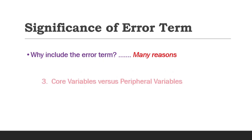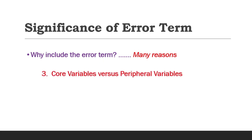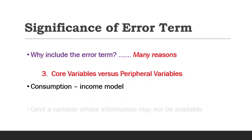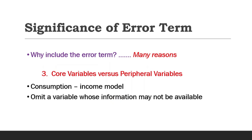The third point is core variables versus peripheral variables. For instance, in the consumption-income model, besides income, other factors such as the size of household, gender, religion, education, and others might affect consumption. However, perhaps information on education generally is not available, so we are forced to omit the education variable from the model despite its theoretical relevance in explaining consumption expenditure, and the u parameter simply replaces it.